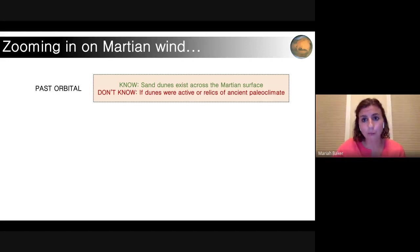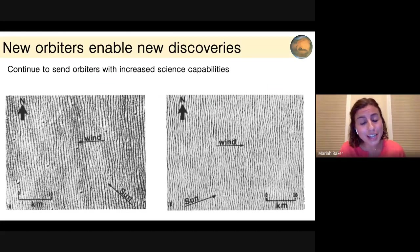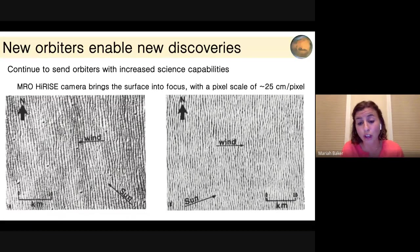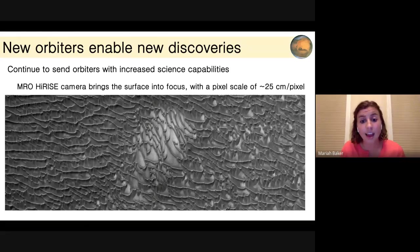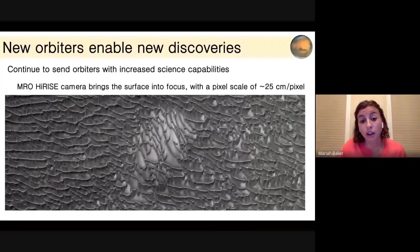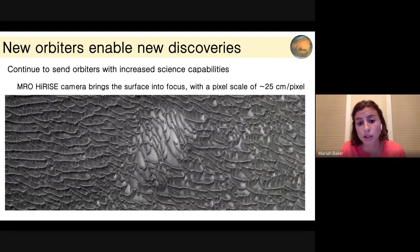To answer this question, we needed to send better orbiters. In particular, we sent the Mars Reconnaissance Orbiter High Resolution Imaging Science Experiment — the HiRISE camera — which has an incredible spatial resolution of 25 centimeters per pixel, meaning you could resolve a human lying down on the surface of Mars. This camera really brought the surface into focus, turning earlier blurry images into stunning detailed ones. These are exactly the same dune field — the Olympia Undae dune field in the northern high latitudes — which goes around the entire circumference of the planet.